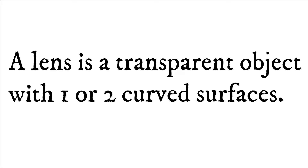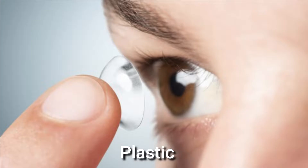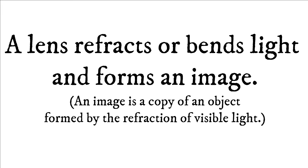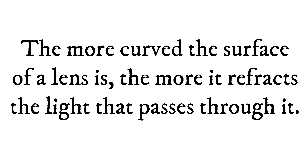A lens is a transparent object with one or two curved surfaces. It is typically made of glass or clear plastic, as in the case of a contact lens. A lens refracts or bends light and forms an image. An image is a copy of an object formed by the refraction of visible light. The more curved the surface of a lens is, the more it refracts the light that passes through it.